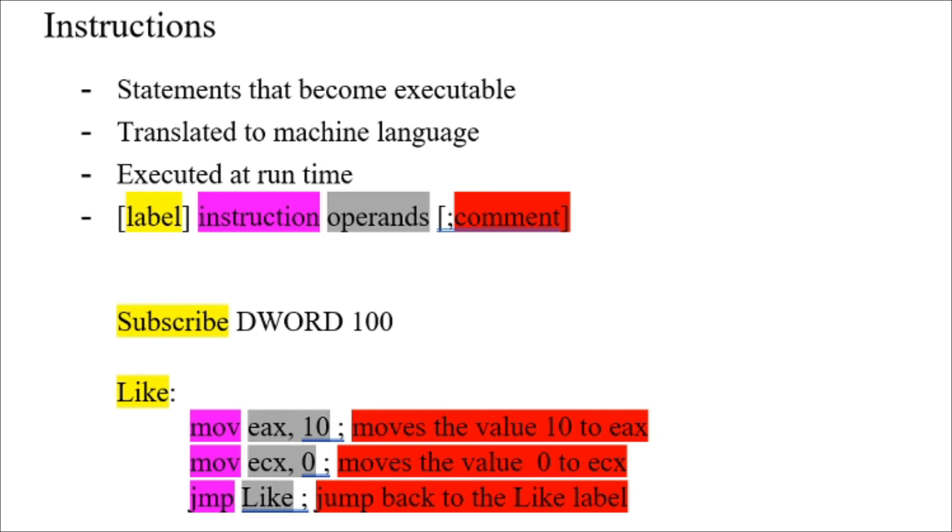Lastly, you have comments. Comments are again optional and are represented by putting a semicolon after the operands. Anything after the semicolon is considered a comment. A comment here, for example: moves the value 10 to eax, moves the value 0 to ecx, and jump back to the Like label.